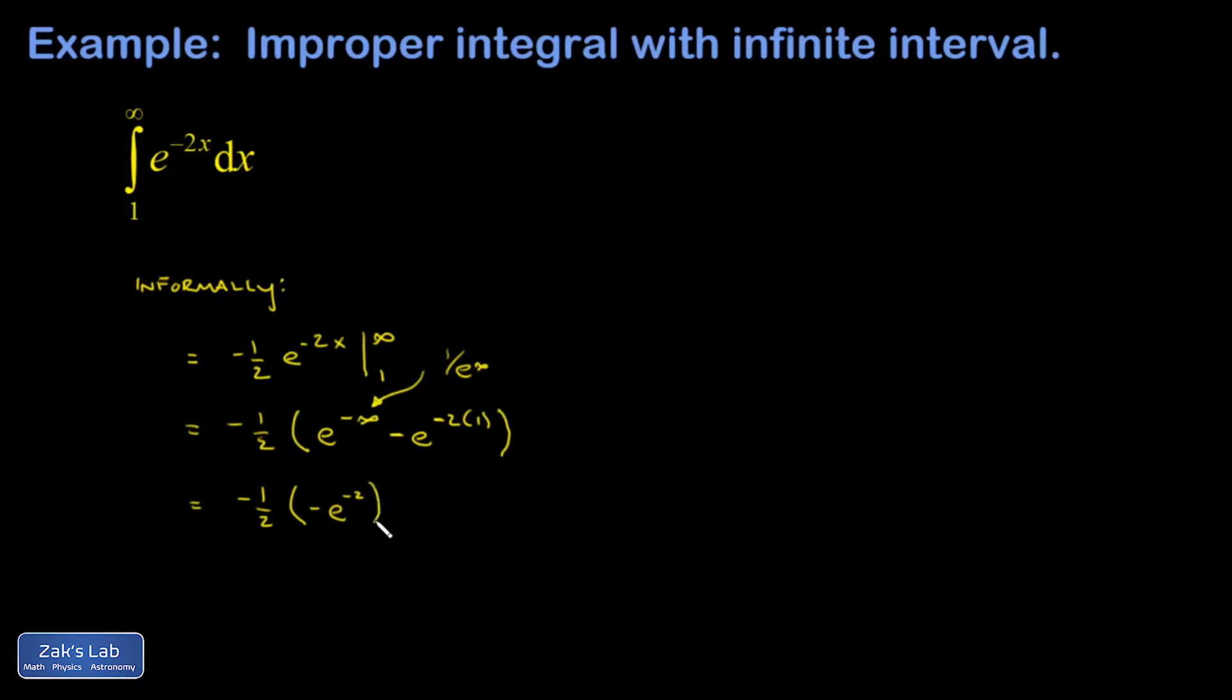I can cancel the factors of negative 1 and rewrite with a positive exponent, and I get 1 over 2 e squared. The slightly more formal way that we're normally taught to do this in introductory calculus is to say, well, infinity is not really a number. I have to treat it as a limit.